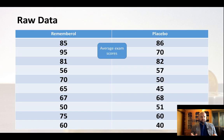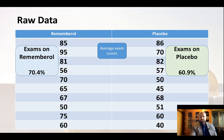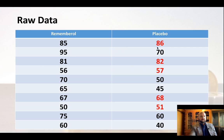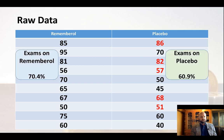But there's a little bit of a problem. Let's look at the raw data. These are my participant scores — what they scored when they took the drug, and what they scored when they were just taking the placebo. The averages are looking pretty good, 70% compared to 60%, but let's look more closely. We can see that half of my participants did better on the placebo — 5 out of 10 actually scored higher taking the placebo than Remembrol. Suddenly these percentages don't look so strong. Is Remembrol really working?